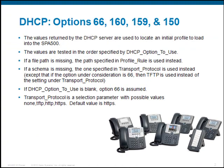The SPAR IP phones now support four DHCP options, including option 66, which is most common, but also now options 159 and 160. The DHCP option to use lists the options. If a file path is missing, the path will use whatever is specified in the profile rule. If a scheme is missing — for example, you don't specify HTTPS or HTTP — it will default to using TFTP.